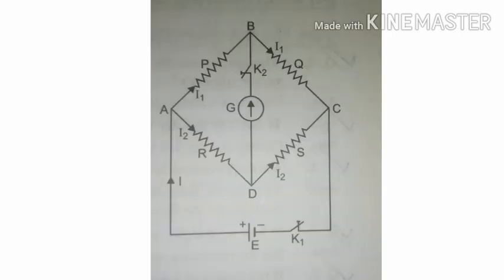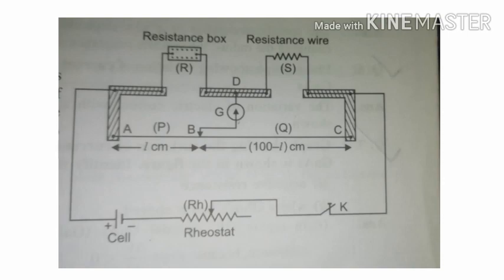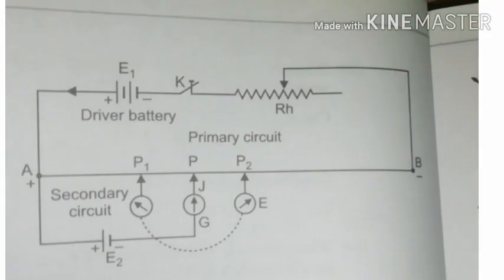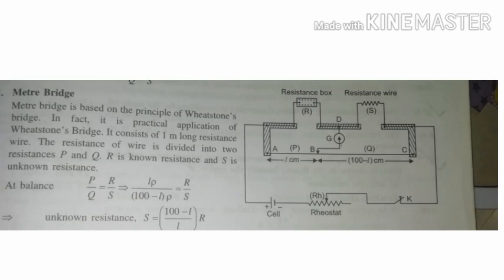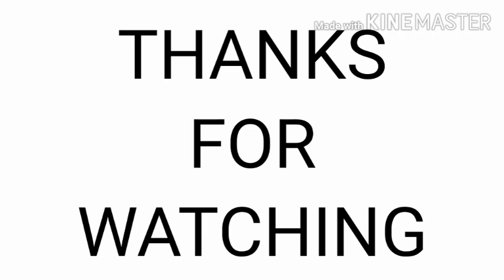Wheatstone bridge: the balance condition is P by Q equal to R by S. Meter bridge and potentiometer are very important topics. This covers the current electricity unit.